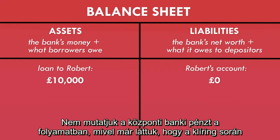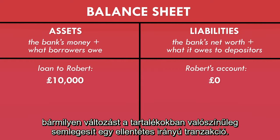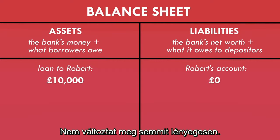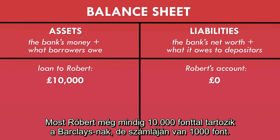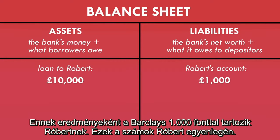We won't show the central bank reserves in this process because, as we saw with the clearing process, any change in the reserves would probably be cancelled out by payments going in the opposite direction — it won't change things in any significant way. Now, Robert still owes £10,000 to Barclays, but also has an account with Barclays that now has a balance of £1,000. As a result, Barclays has a liability to Robert of £1,000 — that's the numbers in Robert's bank balance.